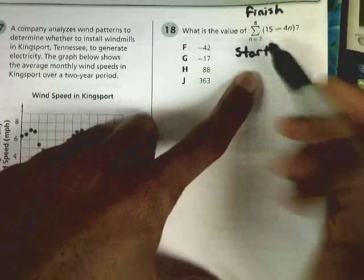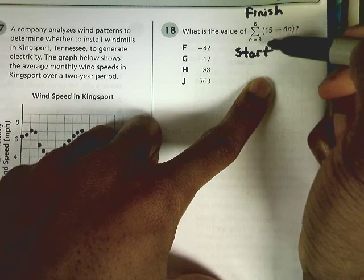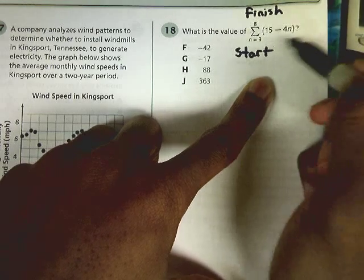So again, this is a summation, so we're plugging in all the numbers starting at 3, going all the way up to 8, into this formula here.